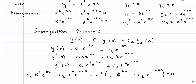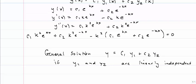I'm going to be a little more specific here. I can say that this solution y, which is equal to c1 y1 plus c2 y2, is in fact the general solution if y1 and y2 are linearly independent. What does that mean? That means that one can't be a constant multiple of the other.